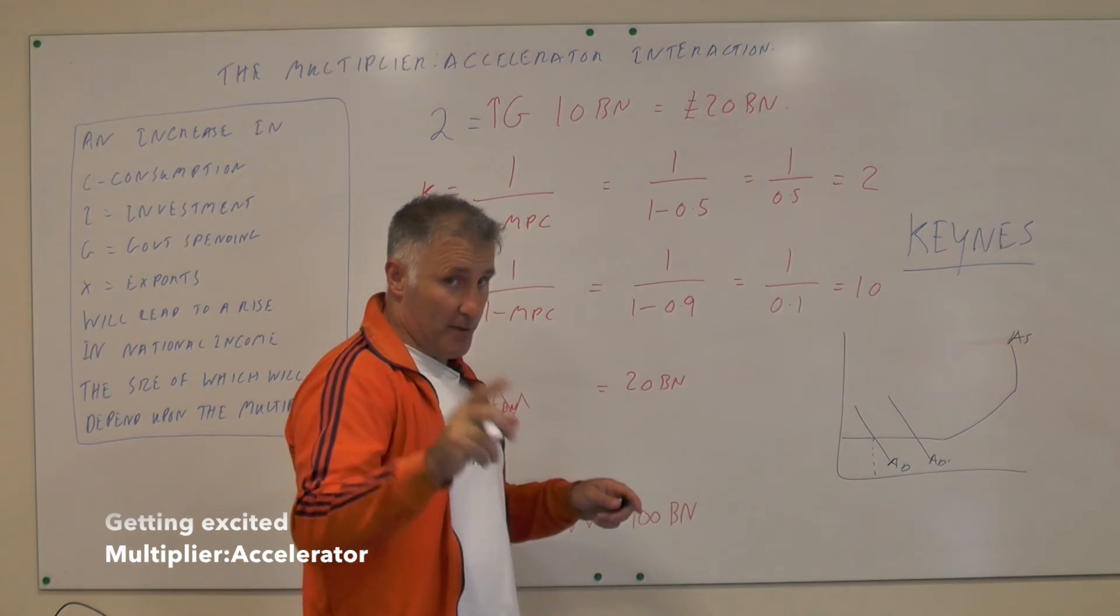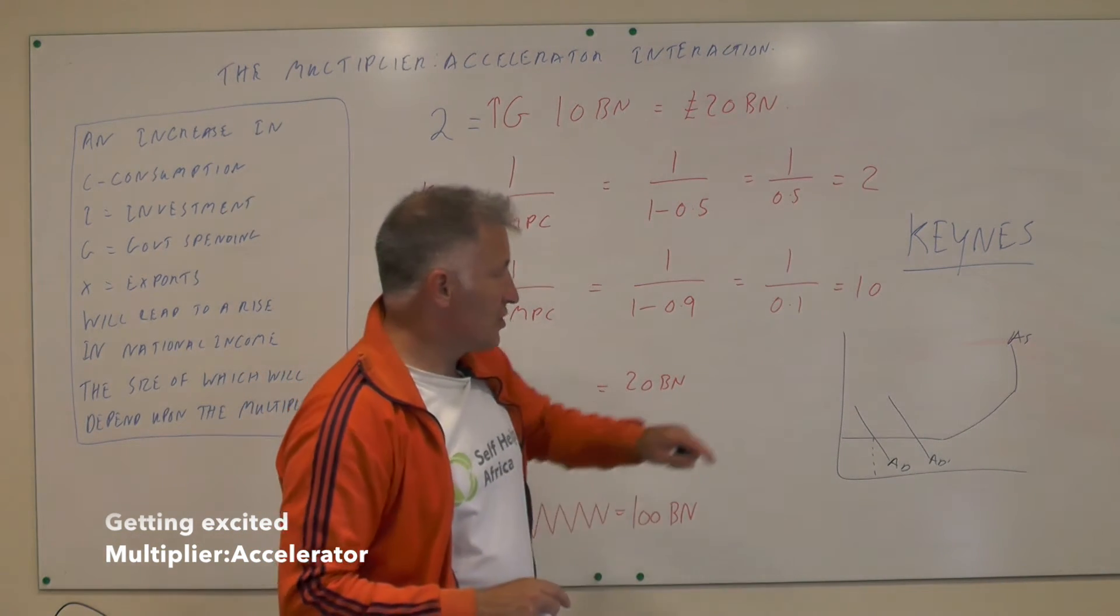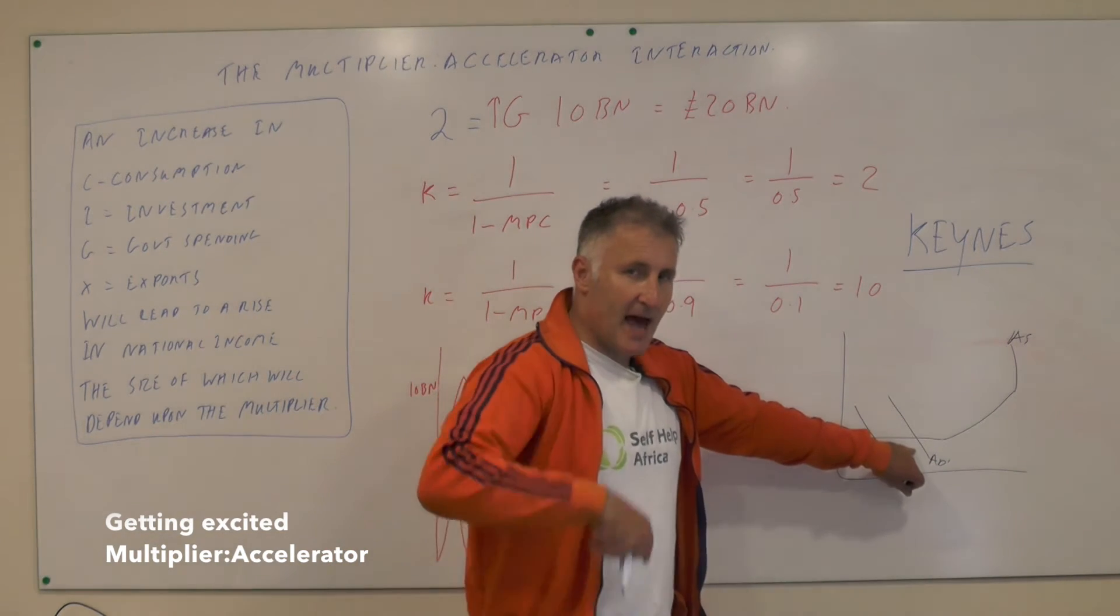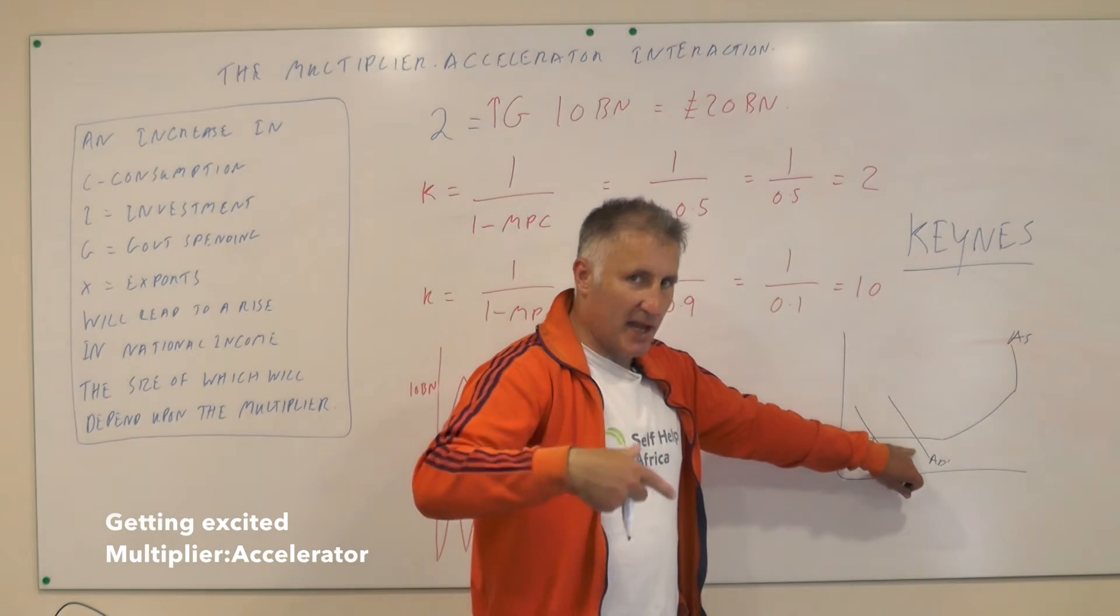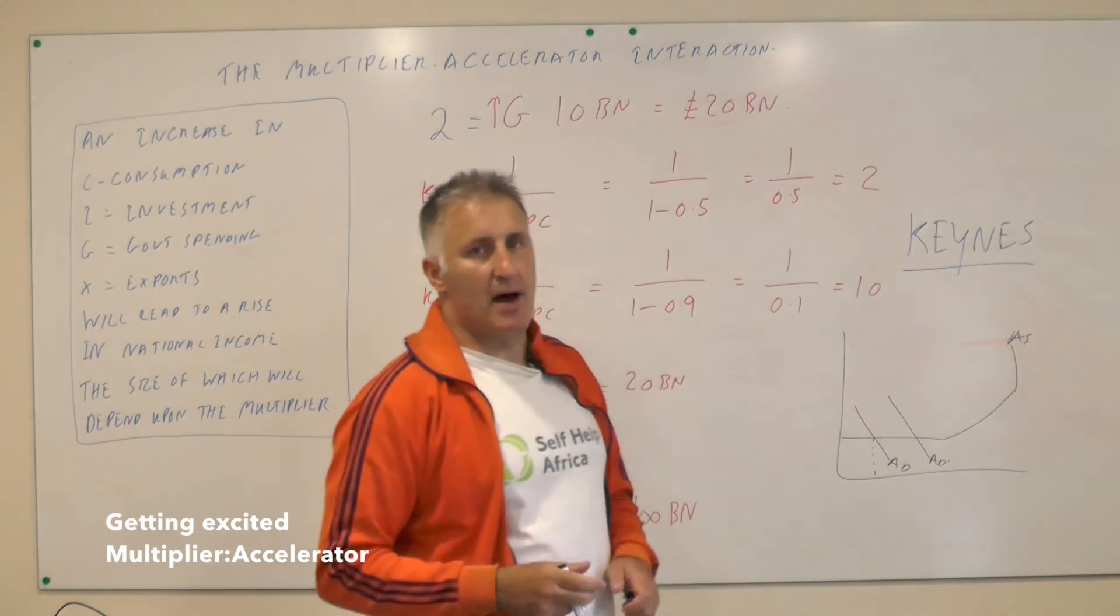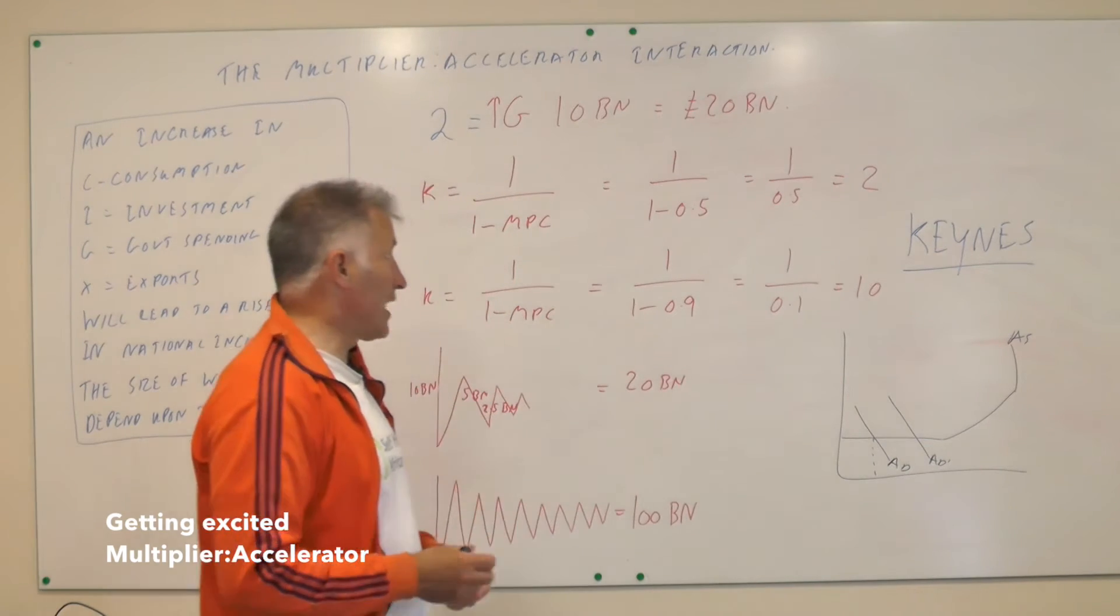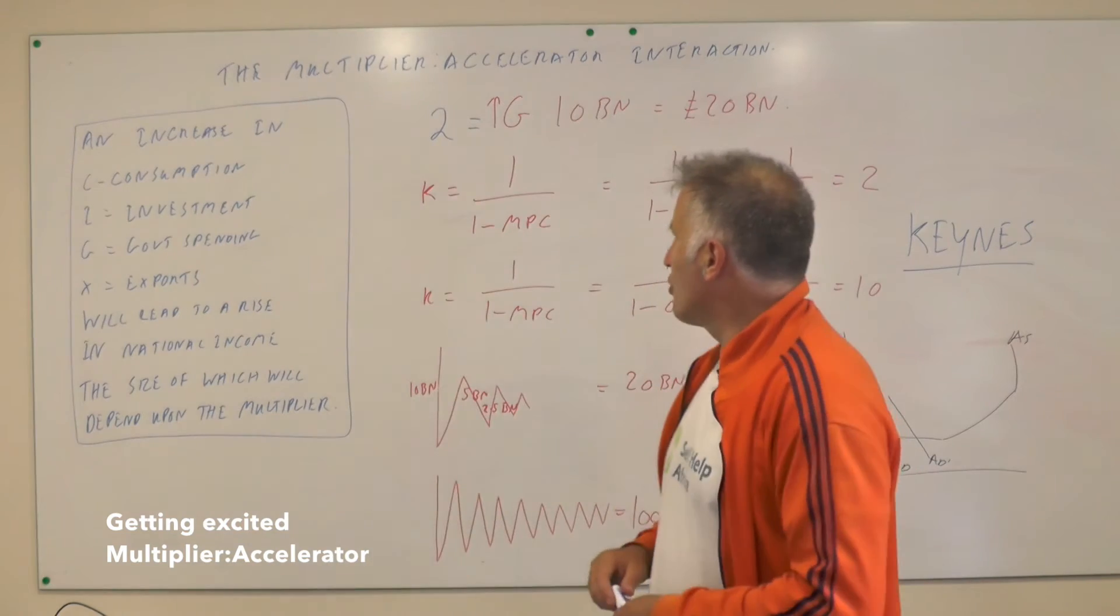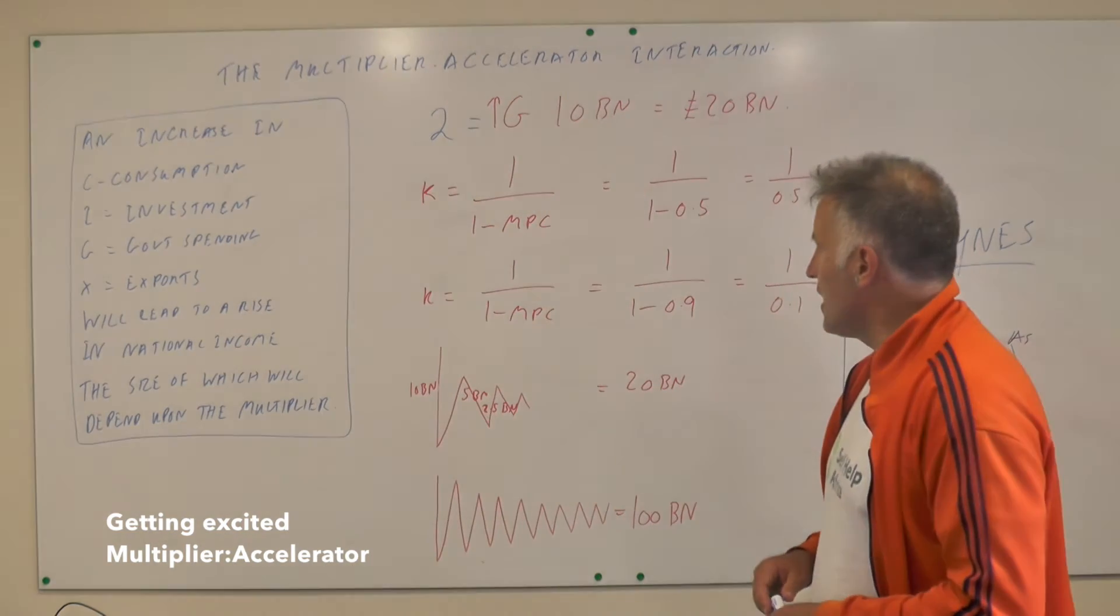Obviously though, the only problem with increasing government spending is the government is going to get into more debt. However, this is really important: his argument was by increasing G you would increase AD, and then at the end of the day you would get more money back which would pay off the initial amount of money that you borrowed.